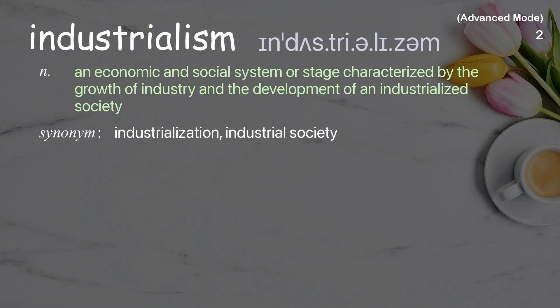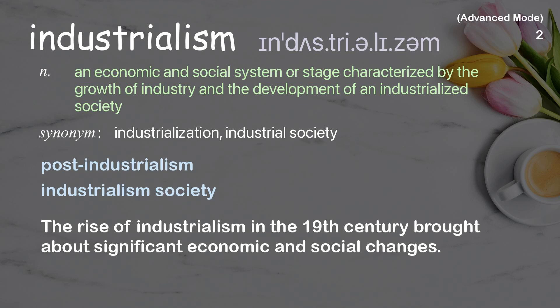Industrialism: an economic and social system or stage characterized by the growth of industry and the development of an industrialized society. Examples: post-industrialism, industrialism society. The rise of industrialism in the 19th century brought about significant economic and social changes.